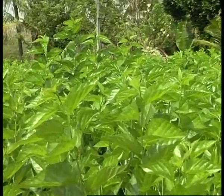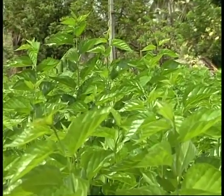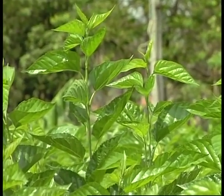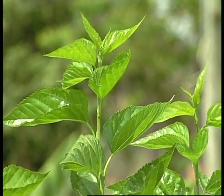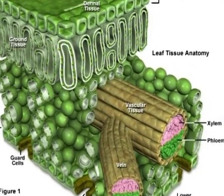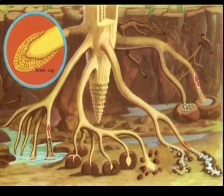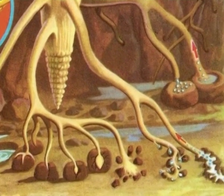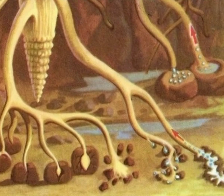Before going to actual anatomy of mulberry, let us know what is plant anatomy and the tissues present in the plant. Plant anatomy is a branch of plant science which deals with the study of internal structure of plants. It can also be termed as structural organization in plants. In the internal structure of any plant, we can find a number of tissues. A tissue can be defined as a group of cells having similar origin, structure, and function.